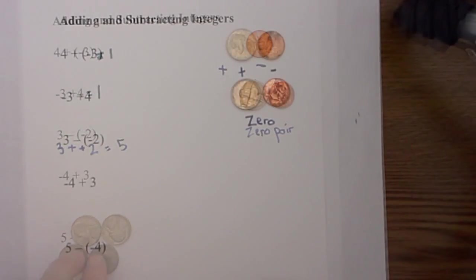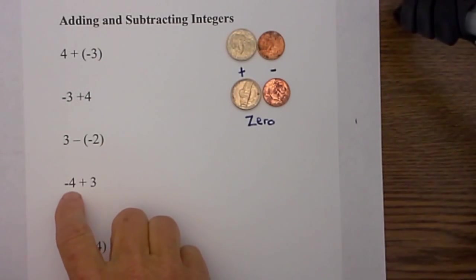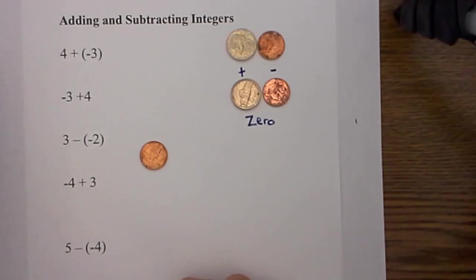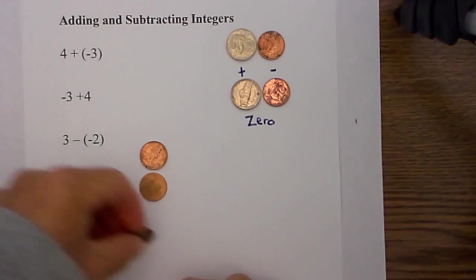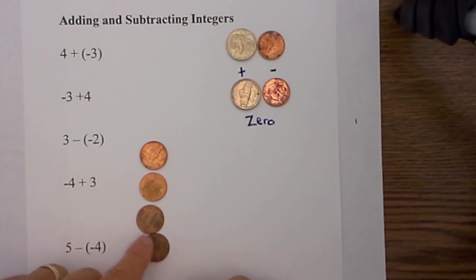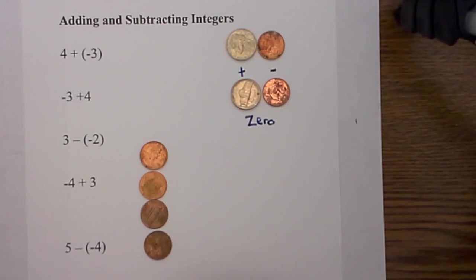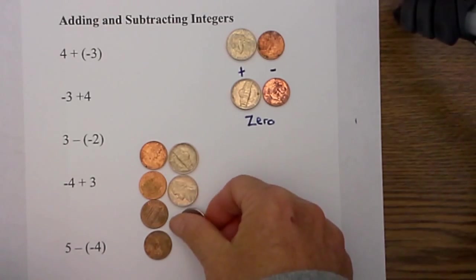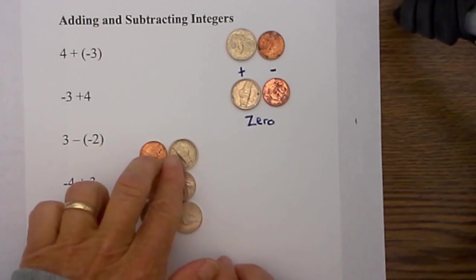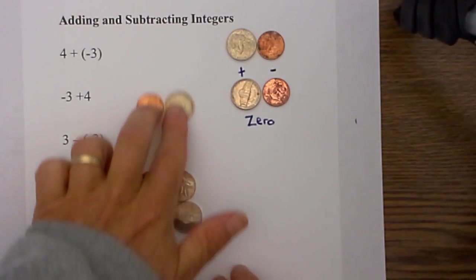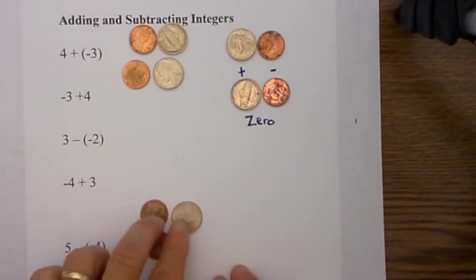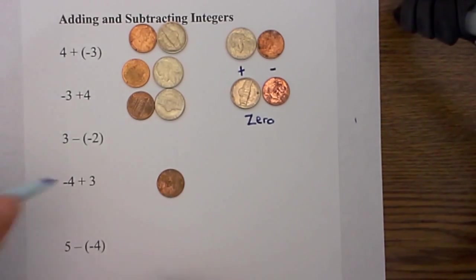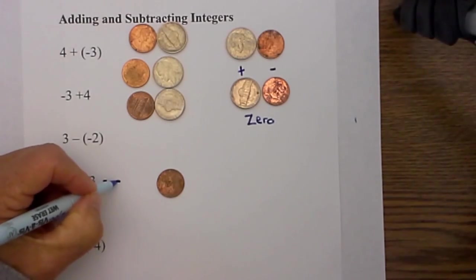Next we have negative 4 plus positive 3. I will place 4 negatives — remember a penny is negative because it is worse to get 1 penny back than 5 cents. Then we add 3 positives — 1, 2, 3. I can see zero pairs, so they cancel. Each pair cancels until I am left with 1 negative, so that equals negative 1.